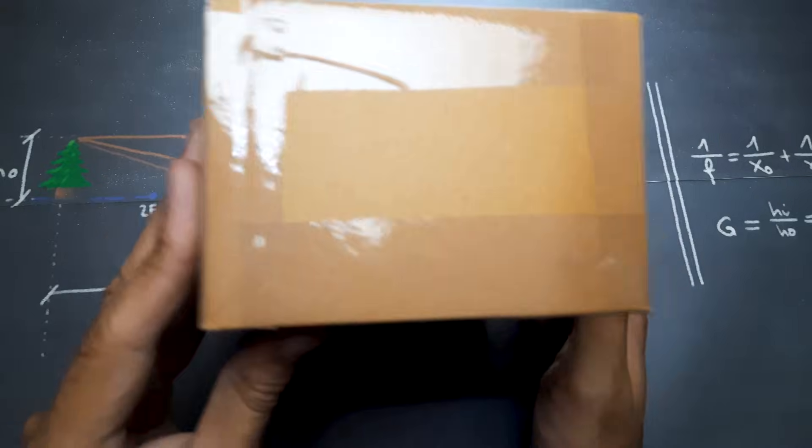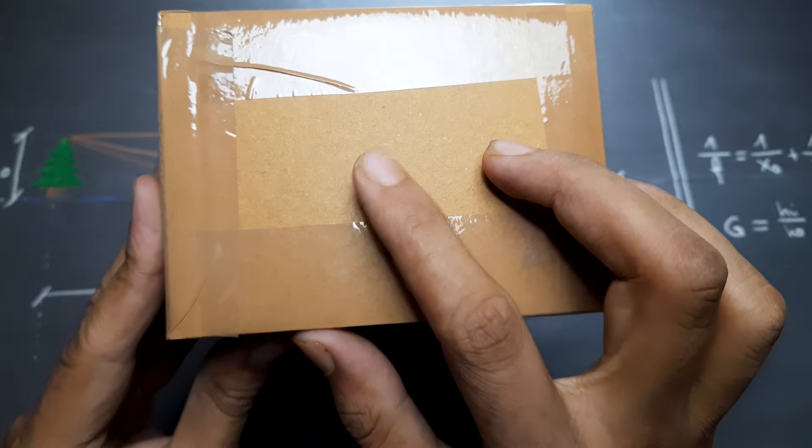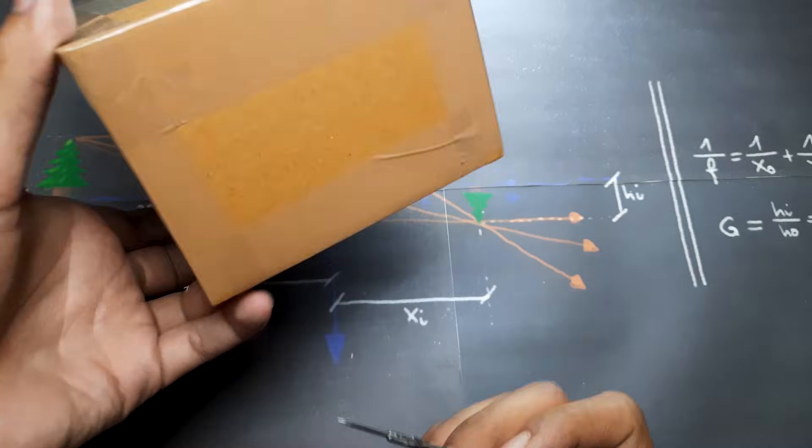On the opposite side of the screen, make a small hole. Use a pin to gently poke a tiny hole in the center. That's your pinhole lens.